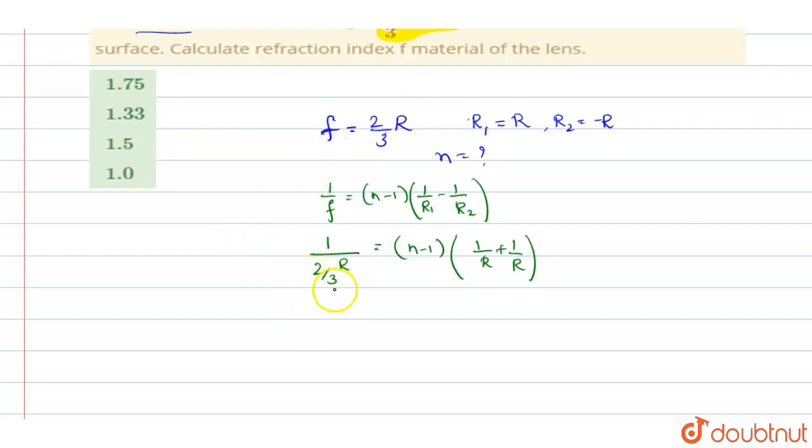So 1 by 2 by 3 r, you can write this as denominator's denominator goes to numerator, so you can write it as 3 by 2 r is equal to n minus 1 into 2 by r. 1 by r plus 1 by r becomes 2 by r. So r gets cancelled on both the sides.